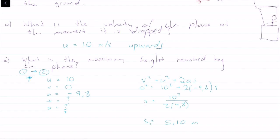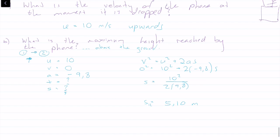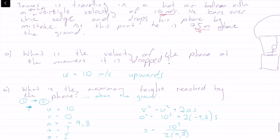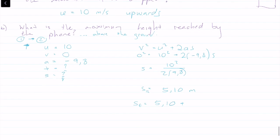So that's how high the phone travels from point 1 to point 2. The maximum height above the ground is the total displacement: 5.10 plus his original height of 7.5 meters, giving 12.6 meters above the ground.